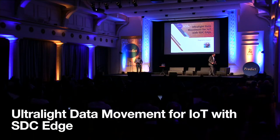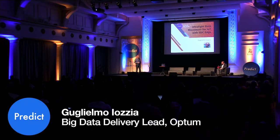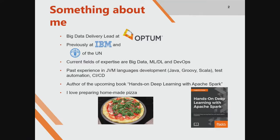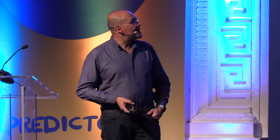Thanks for attending. So let's start with a quick presentation. My name is Guglielmo Juzia — it's in the slide. I'm working for Optum, which is an American company, part of the United Health Group. We are based in Dublin, on the other side of the river. Please feel free to get in touch after this talk if you want to hear more about the company, the projects we have, open roles, and so on. I'm coming from IBM.